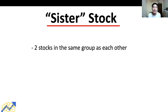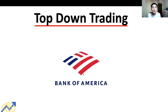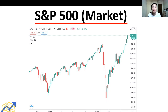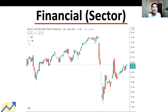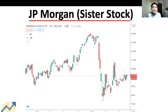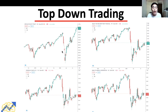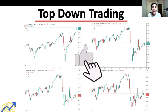Let's look at an example using the Bank of America stock. First, since Bank of America is listed in the US, we look at the US stock market index — in this case, the S&P 500. Second, Bank of America is in the financial sector, so we look at the ETF which tracks the financial sector. Third, a sister stock to Bank of America could be JP Morgan. We then put these charts together: top left is the market, top right is the sector, bottom left is the sister stock, and bottom right is the stock itself — Bank of America.